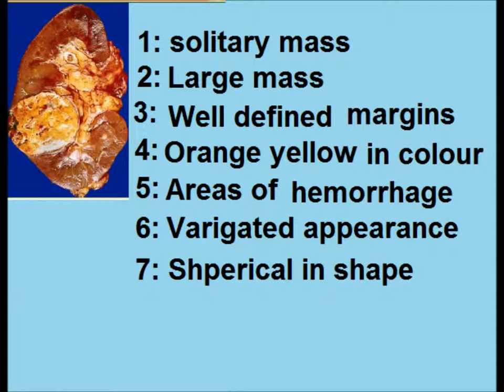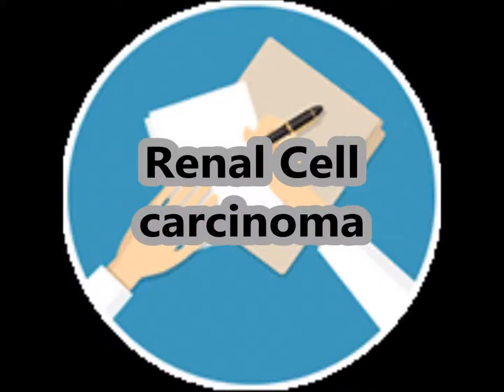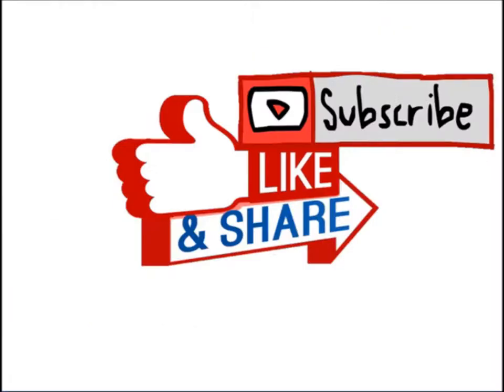Positive points from the history: fifty years old male, flank pain, microscopic hematuria, polycythemia, renal mass — a solitary mass with variegated appearance. The name of the lesion and diagnosis is renal cell carcinoma. Thank you for watching, please subscribe, like and share this video.